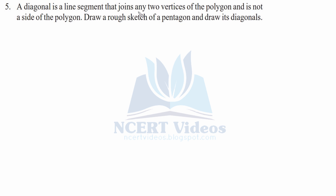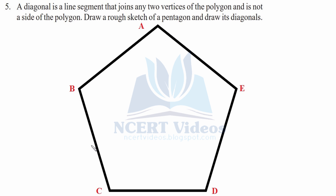Question five: a diagonal is a line segment that joins any two vertices of a polygon and is not a side of the polygon. Draw a rough sketch of a pentagon and draw its diagonals. This pentagon is labelled A, B, C, D, and E. A diagonal joins two vertices but is not a side.